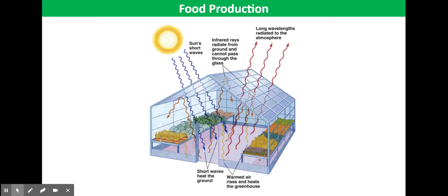Farmers use glass houses and polythene tunnels to grow crops because ultimately it increases the rate of photosynthesis and so increases crop yields. The glass or polythene gives a greenhouse effect, warming up the growing area so that photosynthesis can take place as fast as possible. The level of carbon dioxide in the air can also be controlled to speed up the rate of photosynthesis.